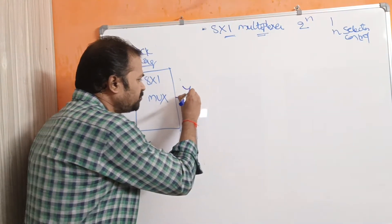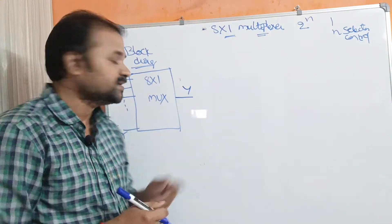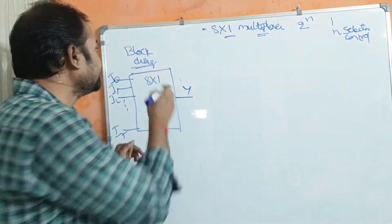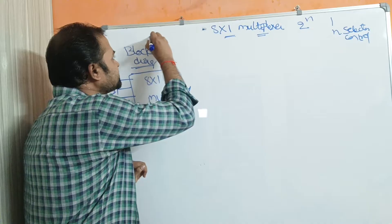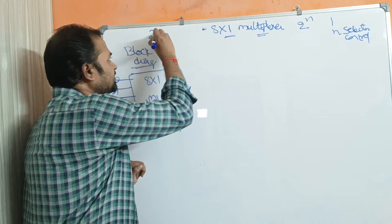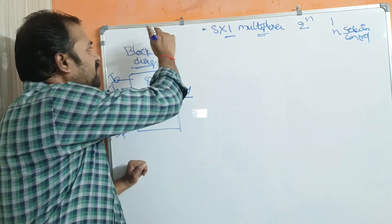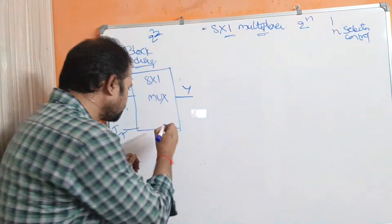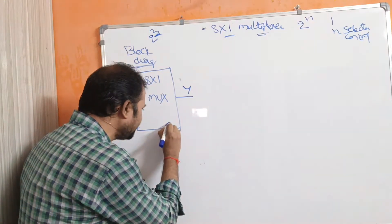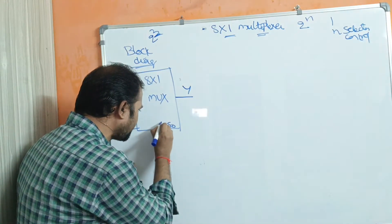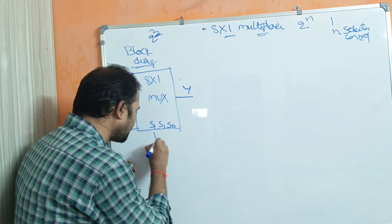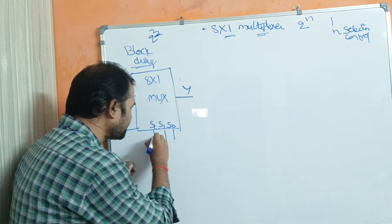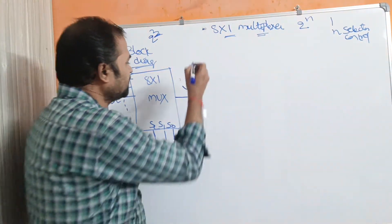Let that output be denoted by Y. Since there are 8 inputs, and 8 equals 2 power 3, we will have 3 selection lines: S0, S1, and S2.